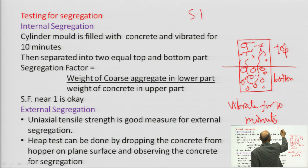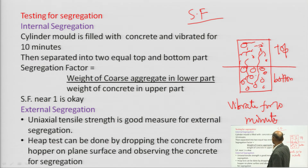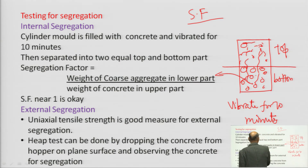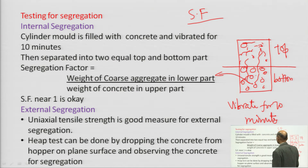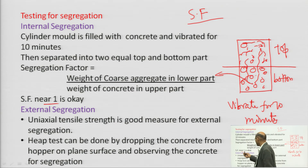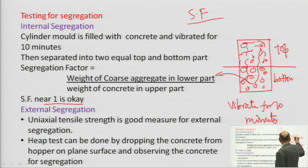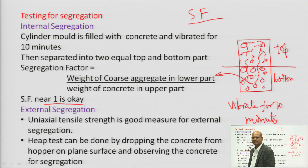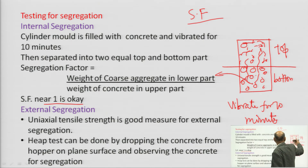Take out all the coarse aggregate and find the segregation factor: weight of coarse aggregate in lower part divided by weight of coarse aggregate in upper part. If the value is nearly 1 — say 0.99 or 0.98 — there is no significant difference, meaning no segregation. After removal, you can also observe the surface visually and judge whether segregation has occurred by finding more coarse aggregate at the bottom.